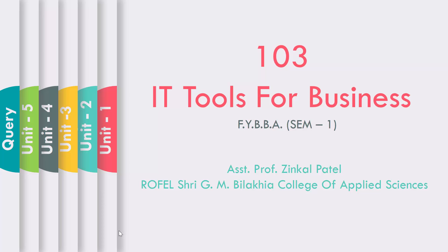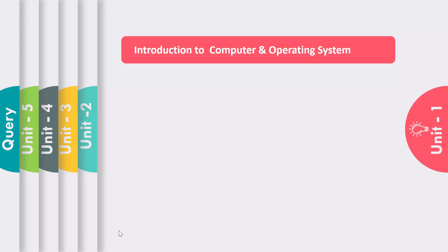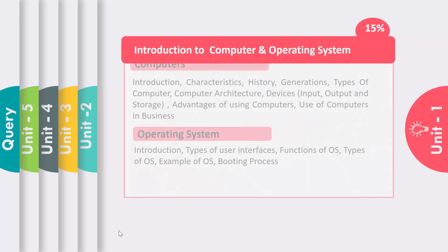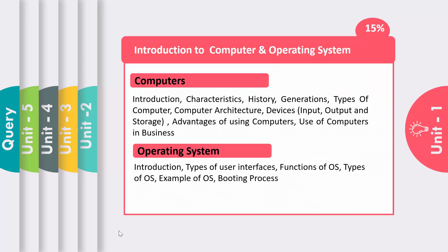Let me start with Unit Number 1: Introduction to Computer and Operating System. This unit has 15% weightage and is divided into two parts. The first part describes the introduction to computer — what is a computer, characteristics of computer, history of computer, generations of computers, types of computer, and computer architecture. It also describes different devices of computer.